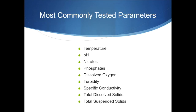Now let's enter the second part of our discussion. We'll talk about how we have been able to standardize water quality and what parameters are currently measured to determine it. The most commonly tested parameters are temperature, pH, nitrates, phosphates, dissolved oxygen, turbidity, specific conductivity, total dissolved solids, and total suspended solids. Now we'll discuss briefly each one by one.